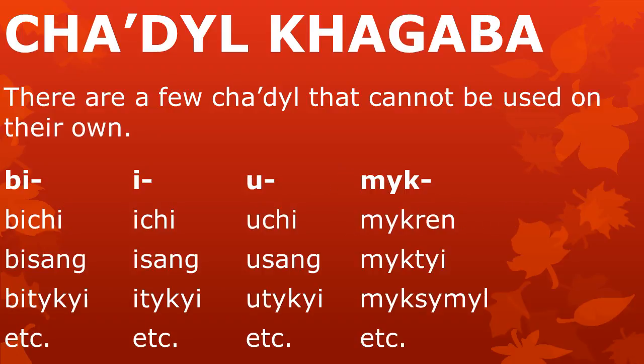Another tzadl kagba is 'mk'. We never use this word alone, but we find it in words like 'mkren', 'mktei', and 'mksemil', where the root 'mk' is bound to some other part. There are undoubtedly some other tzadl kagba in Atong, but we will move on now.